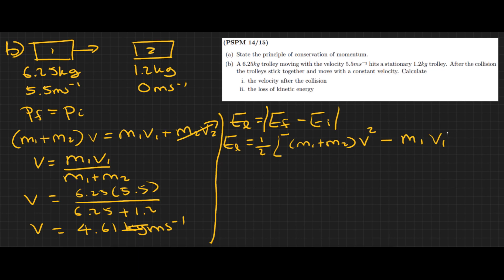Minus, in the initial case we only have m1, so m1 and then v1, which is the initial velocity for trolley 1, squared. So then EL is 0.5 times (6.25 plus 1.2 is 7.45), times 4.61 squared minus 6.25 times v1 which is 5.5 squared.